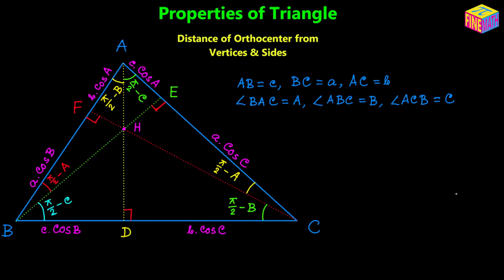The orthocenter is denoted by uppercase H — the point of intersection of the three altitudes. In triangle HBD, angle BHD equals uppercase C because angle HBD is 90° − C and it is a right triangle. In triangle HDC, angle DHC equals uppercase B. In right triangle HFB, angle FHB equals uppercase A because angle FBH equals 90° − A. Our construction is now complete.